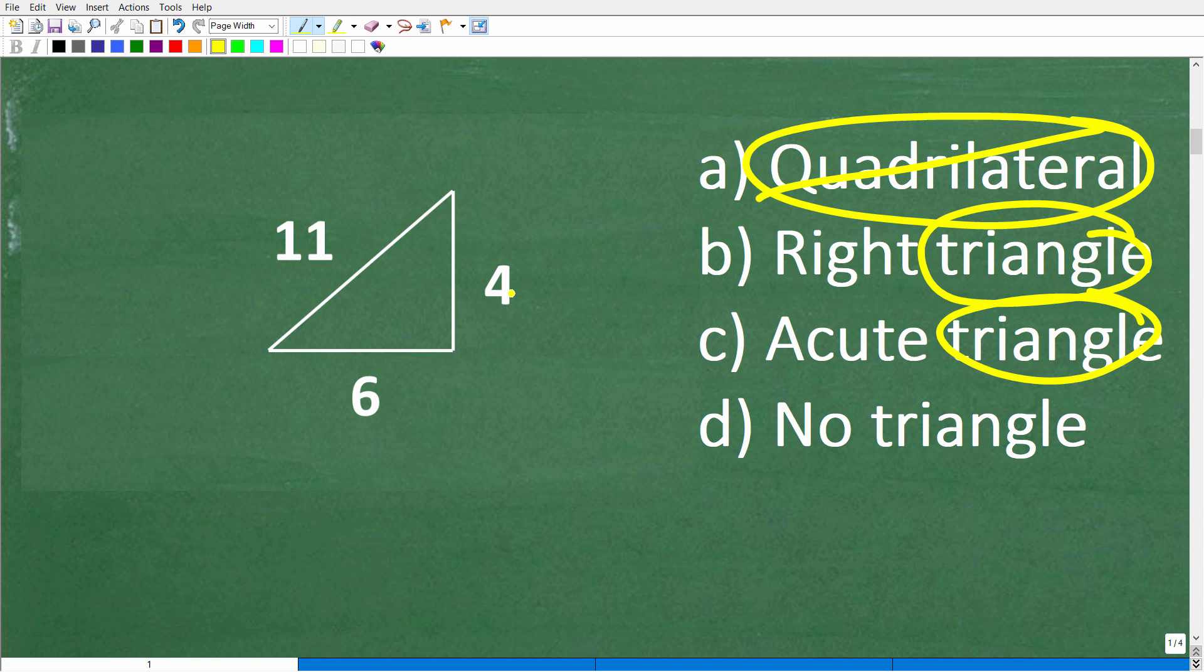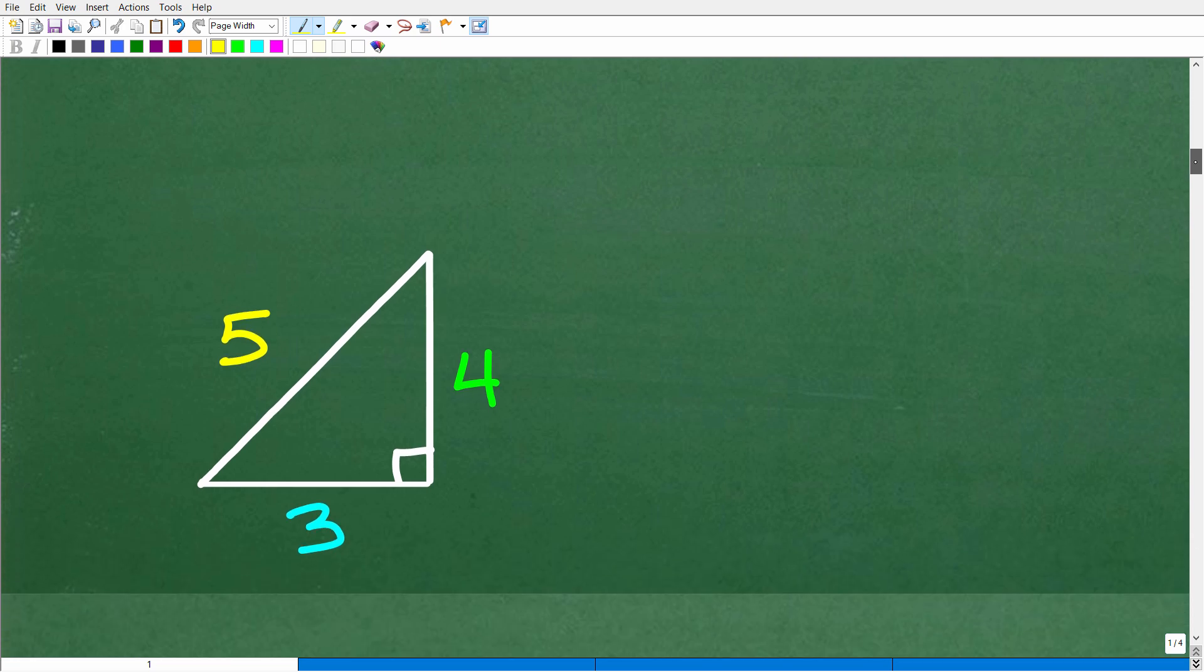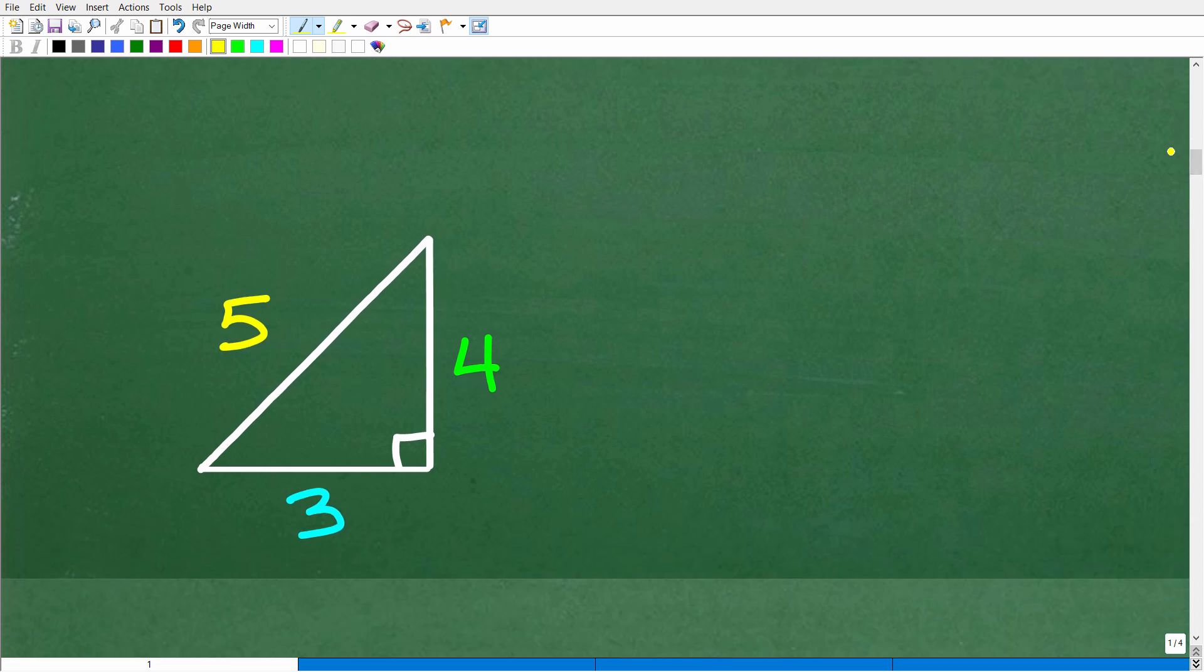Okay, so again, cannot have a triangle with 4, 6, and 11. All right, so let's go ahead and take a look at an actual triangle to explain this and then we'll dispel that our figure is indeed not a triangle. All right, now this is a right triangle. It's a triangle, and these sides are actual sides of a triangle.